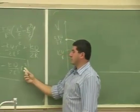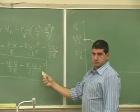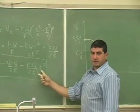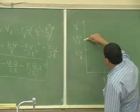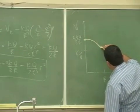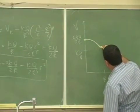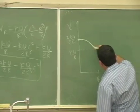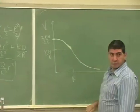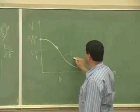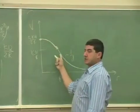It goes as r² over 2, so it's concave down. If you take the second derivative, it's negative — concave down like this. When you get to the surface, the potential is kq over R. After that it goes concave up, which is 1 over r, decreasing as r increases.